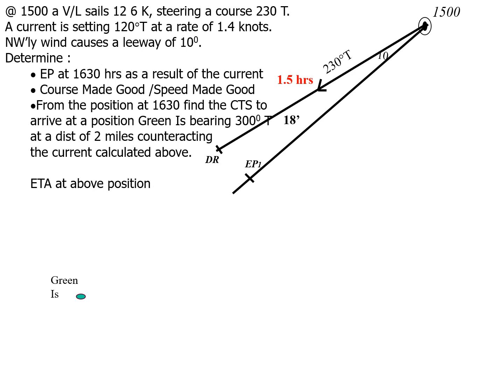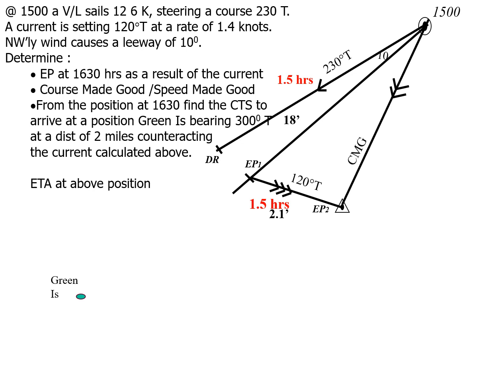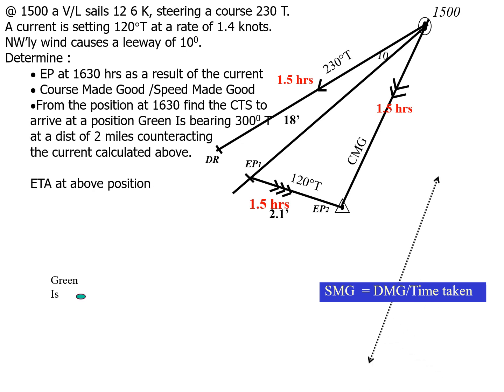Then allow for the current. The current is 120° true at 1.4 knots; over 1.5 hours that gives 2.1 nautical miles of drift. Draw the current from EP1 — three arrows denote its direction — toward 120° true for 2.1 nautical miles. Join the end of the current line back to the 1500 position to get EP2, which gives the course made good and speed made good, denoted by double arrows. Measuring the total distance and dividing by 1.5 hours gives the speed made good.